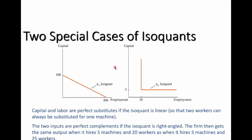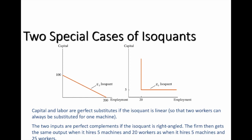Another concept we want to learn today is the shape of isoquants. Earlier we presented isoquants as a convex curve. Here we have two extreme cases — in the first case, shown in the left diagram, capital and labor are perfect substitutes.